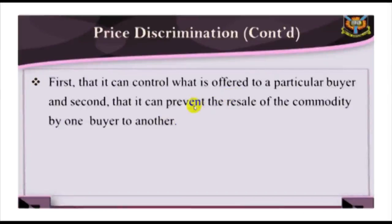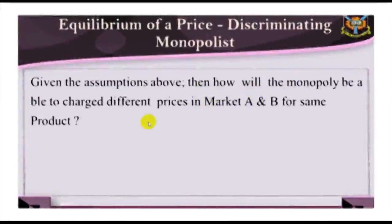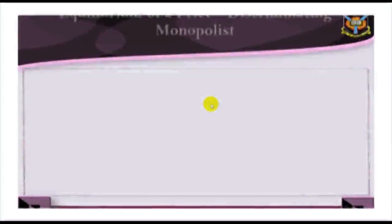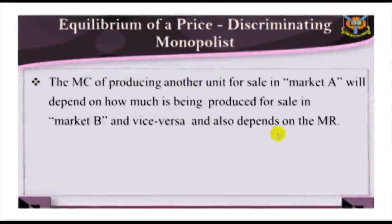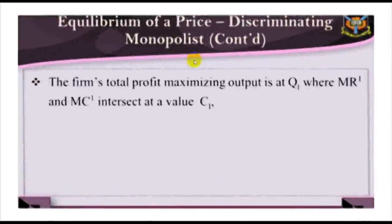Consider a monopoly firm that sells a single product into two distinct markets, A and B. Assume there is no possibility of resale from one market to another. Since the firm can discriminate, it is under no obligation to charge the same price in market A as in market B. The marginal cost of producing another unit for sale in market A depends on how much is being produced for market B, and vice versa. To determine overall production, we need to know the overall marginal revenue, found by summing the separate quantities in each market that correspond to each marginal revenue level.